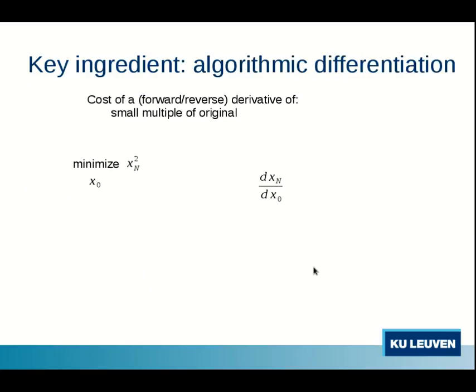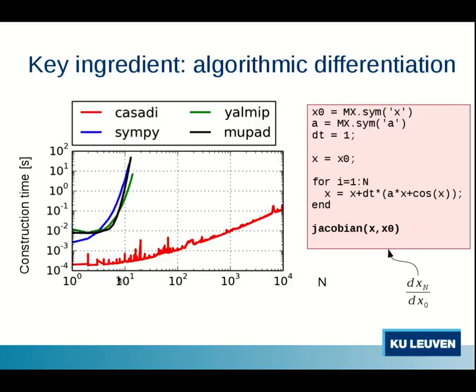The second ingredient is algorithmic differentiation. AD holds the promise that you can evaluate your forward or reverse mode sensitivity with the cost of a small multiple of the original. This means that if you request the Jacobian of the end state with respect to the initial state, that linear relationship should stay linear. And that's exactly what you see in this graph where we ask for the Jacobian.